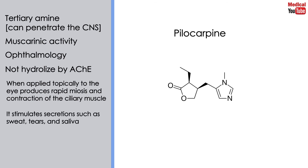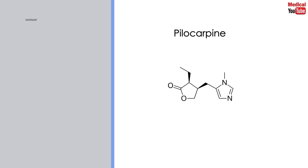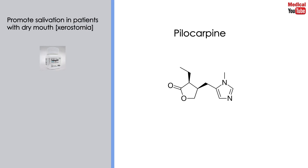It stimulates secretions such as sweat, tears, and saliva. It is used for promoting salivation in patients with dry mouth, which is known as xerostomia. It is available with the brand name Salagen.